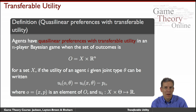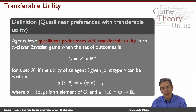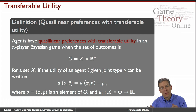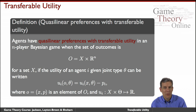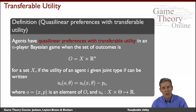Once we have transferable utility, it gives us a lot of power in designing mechanisms — making sure we basically price everything and figure out what kinds of prices people should be paying to change one decision to another. That's going to be a very useful tool in designing mechanisms going forward.